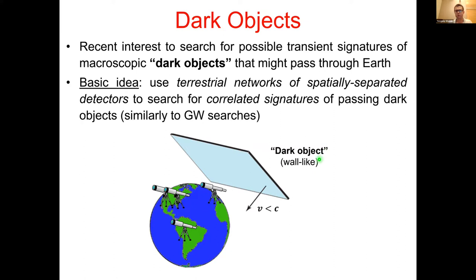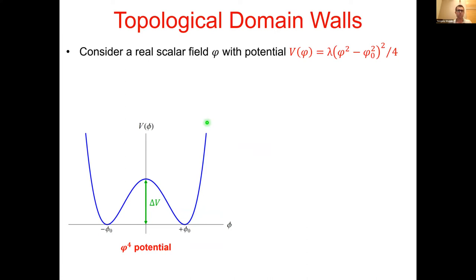In many ways this would be similar to searches for gravitational waves using laser interferometers like LIGO, Virgo, or GEO 600, except that in this case these dark objects should be massive and therefore expected to propagate at a subluminal velocity rather than at the speed of light, which would be the case for gravitational waves.